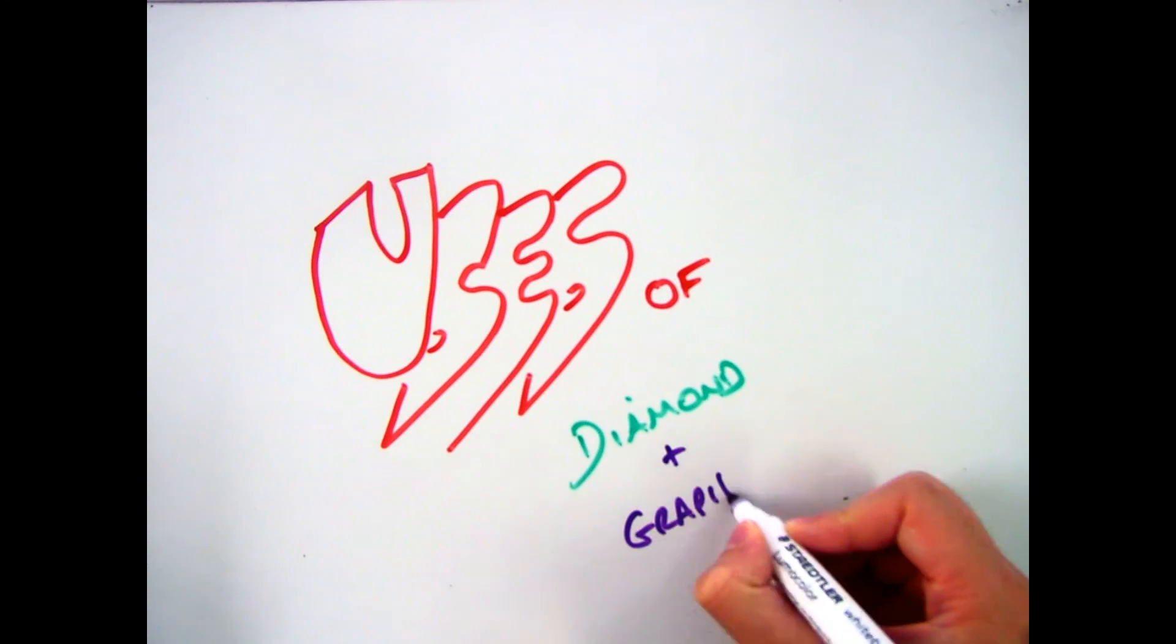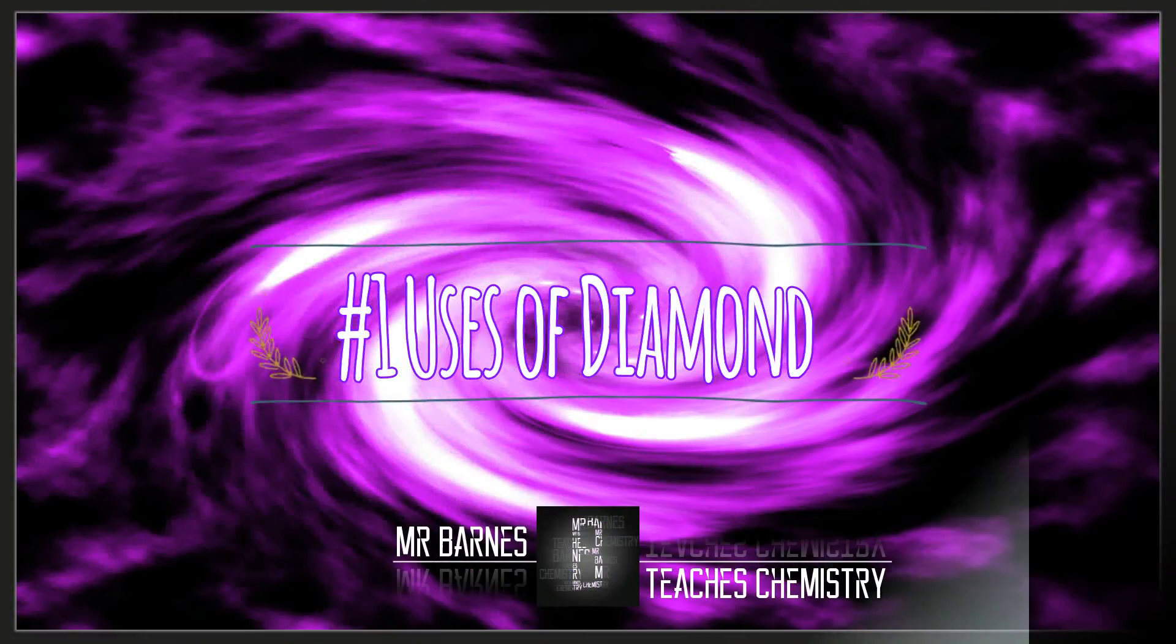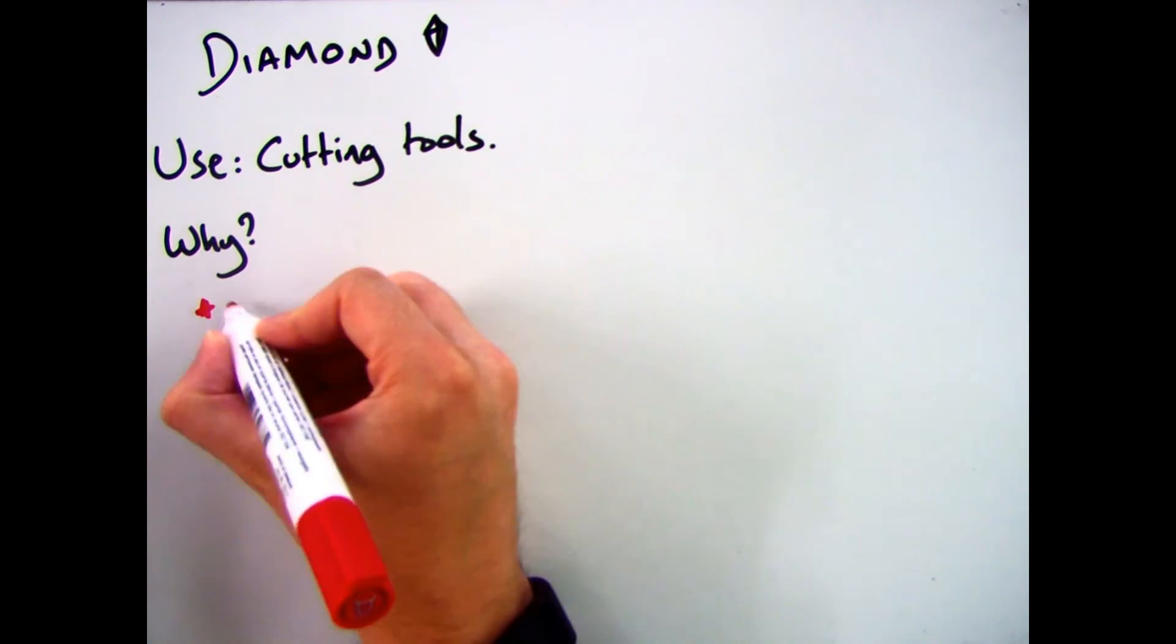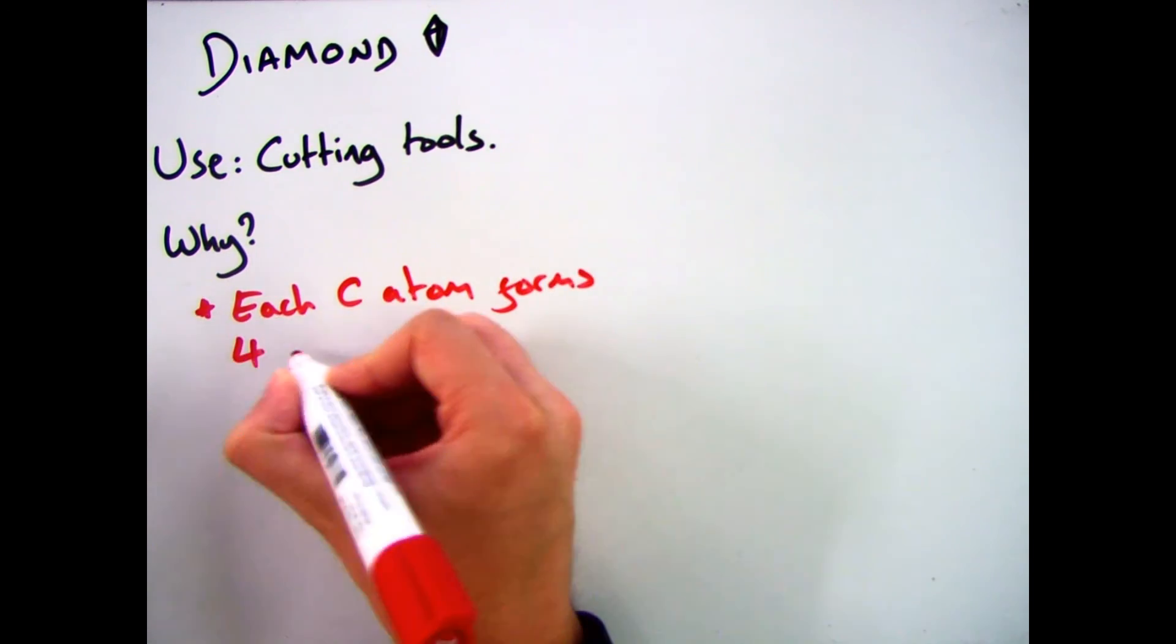Hi guys and welcome to this video which is focusing on the uses of diamond and graphite. So if we start off with diamond then, the main use for that is cutting tools.